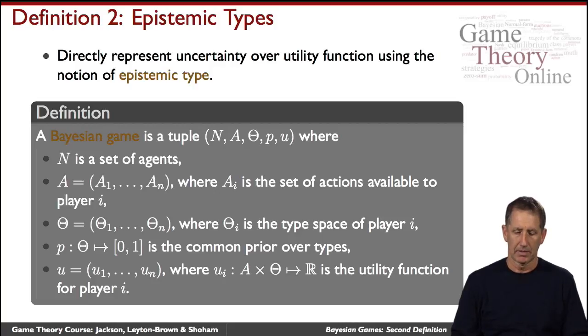The type of the agent is supposed to capture everything that's private information to the agent. If you look at the first definition of Bayesian games that we saw having to do with certainty about types and the common prior, then the type of the agent was her private signal, that is, the information set in which the chosen game lies, as well as everything that emanates from it.